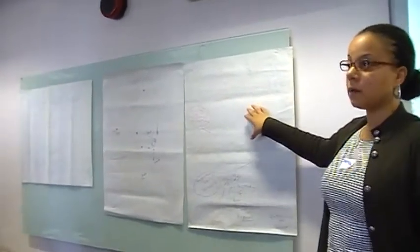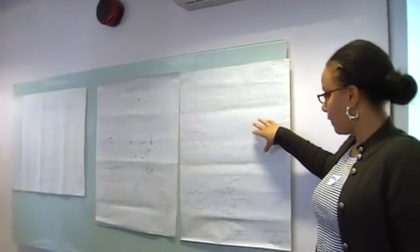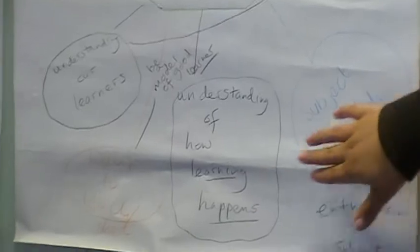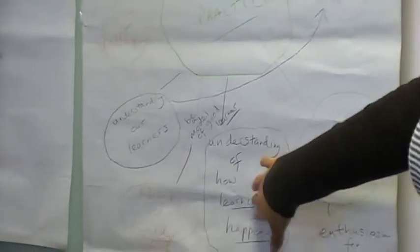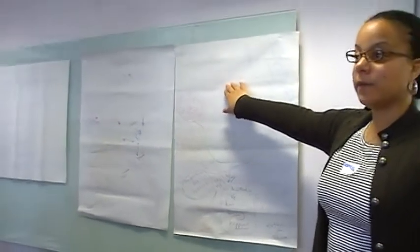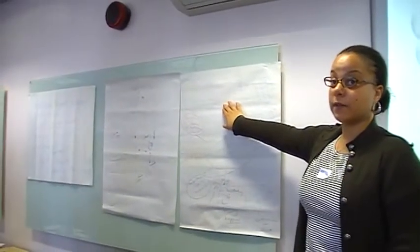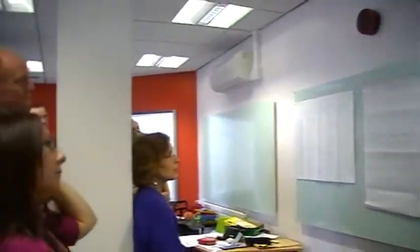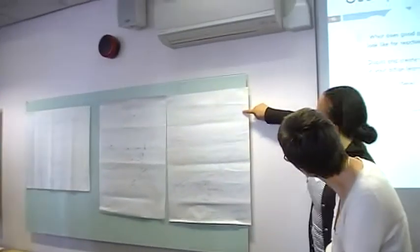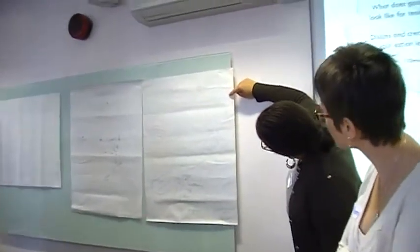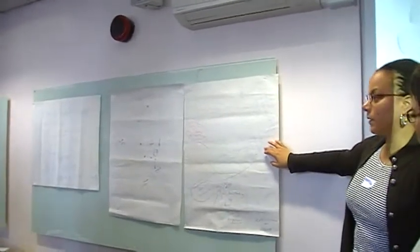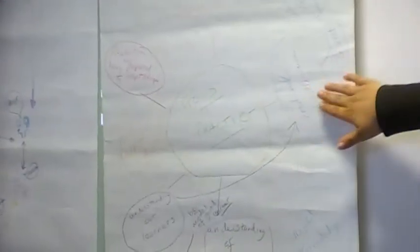We spent quite a long time discussing before we put anything down and we identified some main areas: subject knowledge, understanding of how learning actually happens, reflection, being interested in the actual subject that you are teaching, adaptability, values, and underlying philosophy. We also thought that emotional intelligence is quite important, and we then identified some sub-areas.